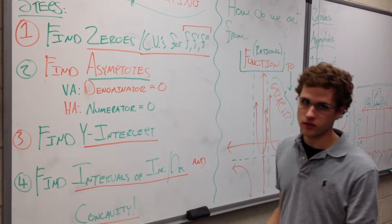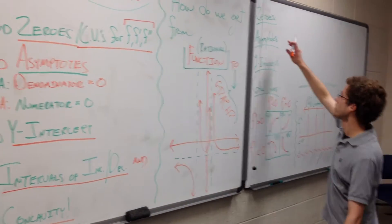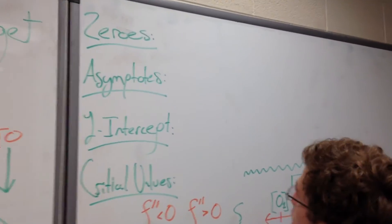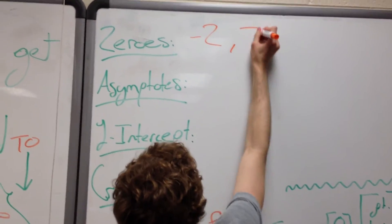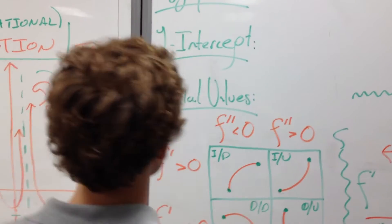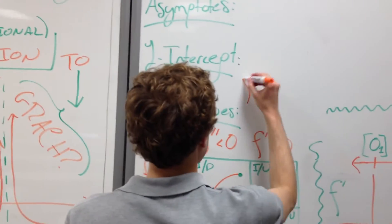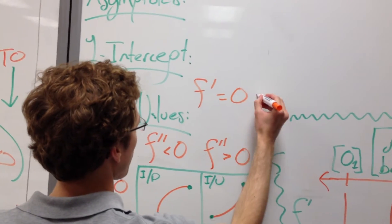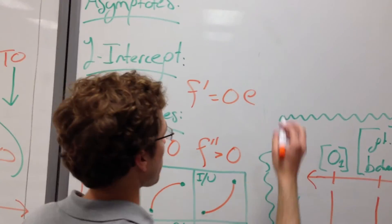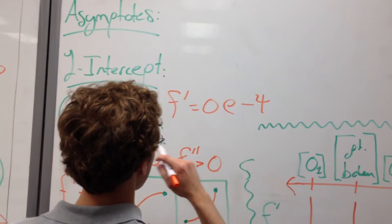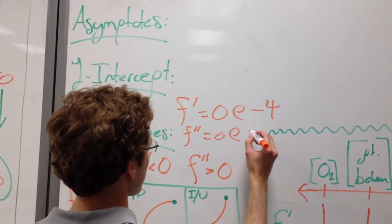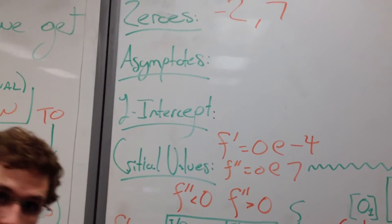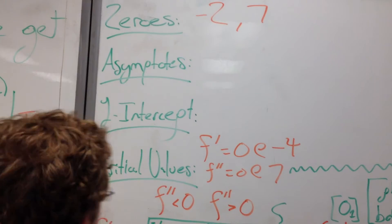Let's write down some critical values arbitrarily. Say our zeros for this function were negative 2 and 7. Those are the zeros. And our critical values were f prime equals zero at negative 4, and f double prime equals zero at 7. We've got our critical values and our zeros. The specific numbers don't matter for the purposes of this example.